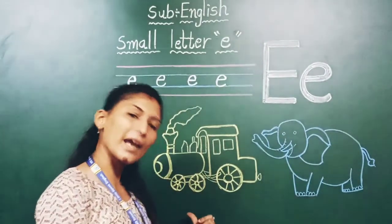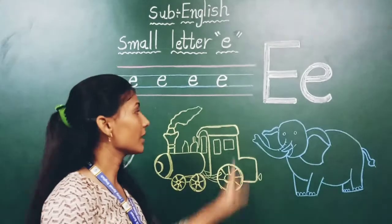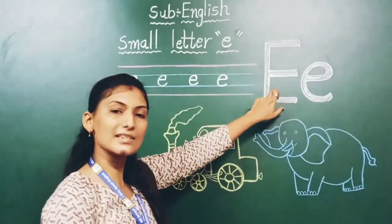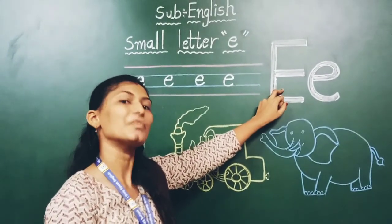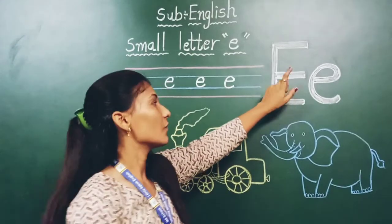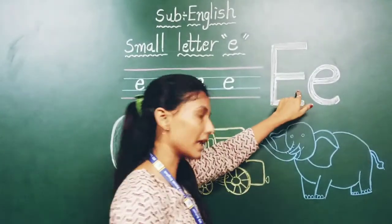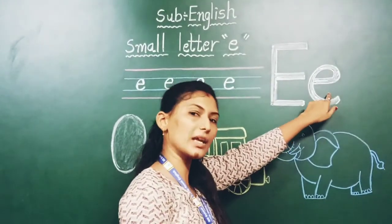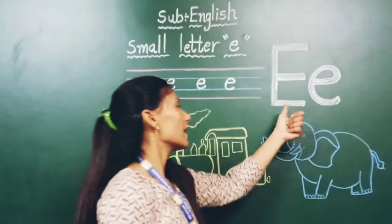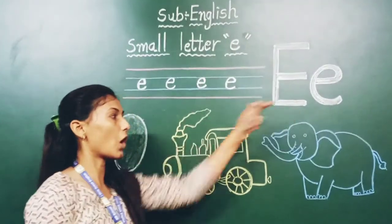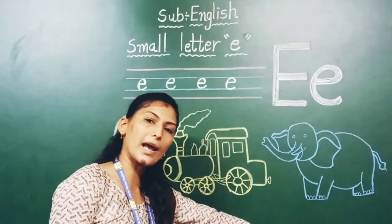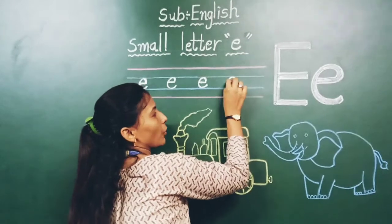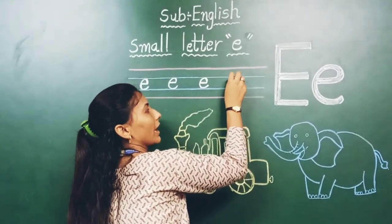E for Egg, E for Engine, E for Elephant. Which letter is this? Capital E. And which letter is this? Small e. Capital E, small e. E for egg, E for engine, E for elephant. How to write small letter E? First you make a sleeping line in the blue line, then curve. Which letter is this? Small letter E.